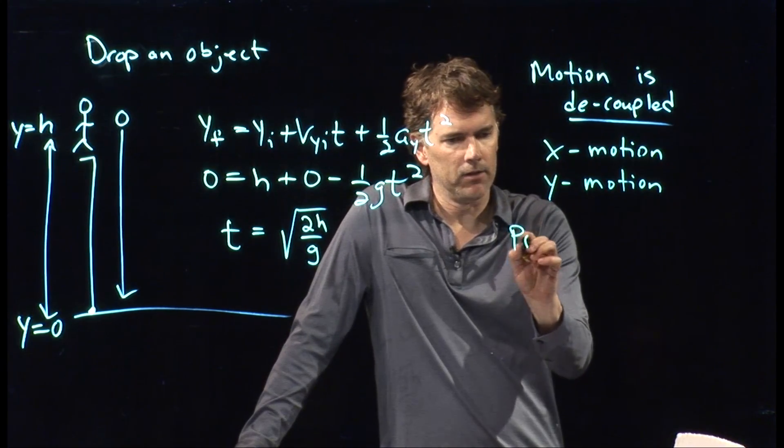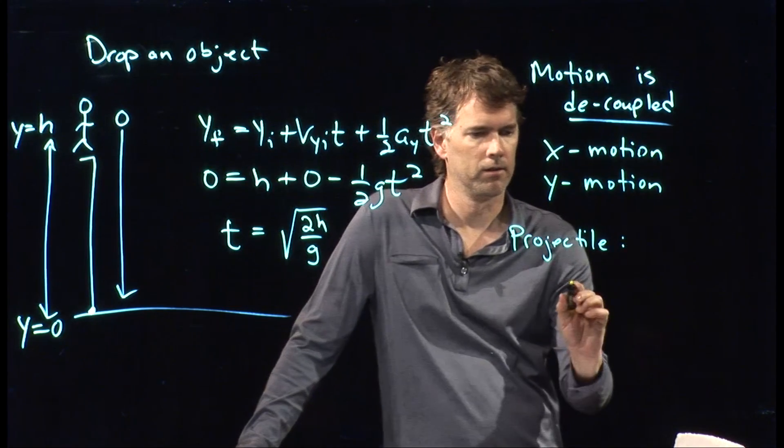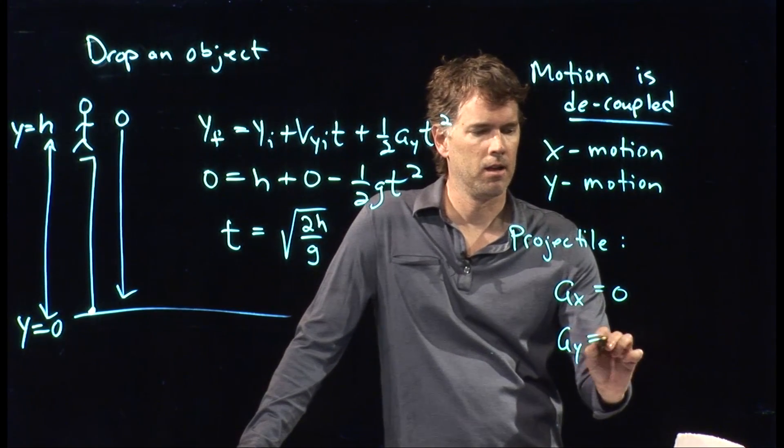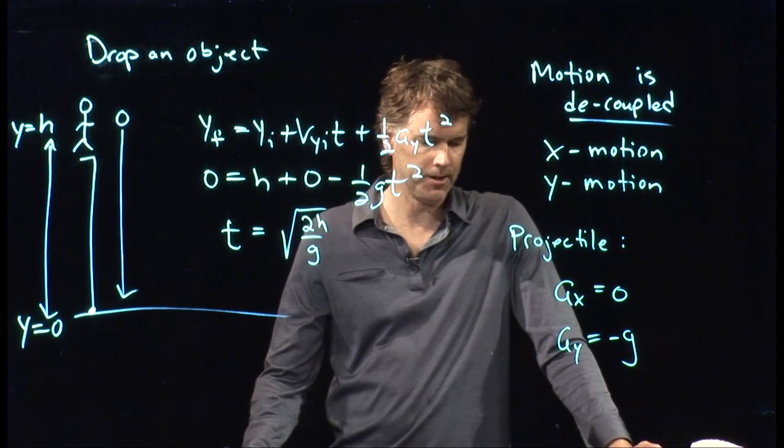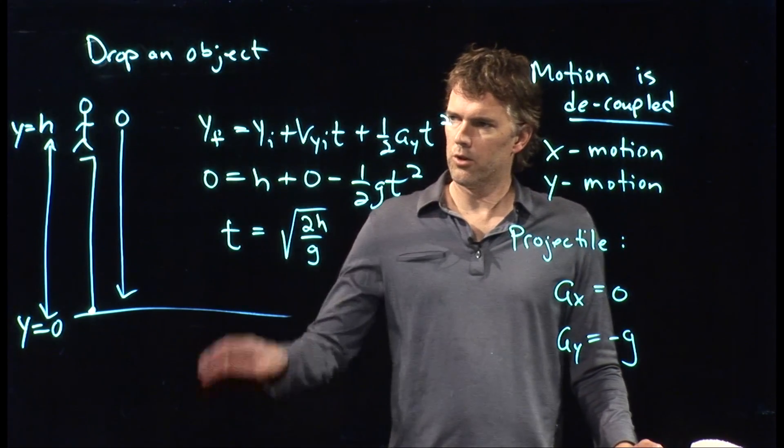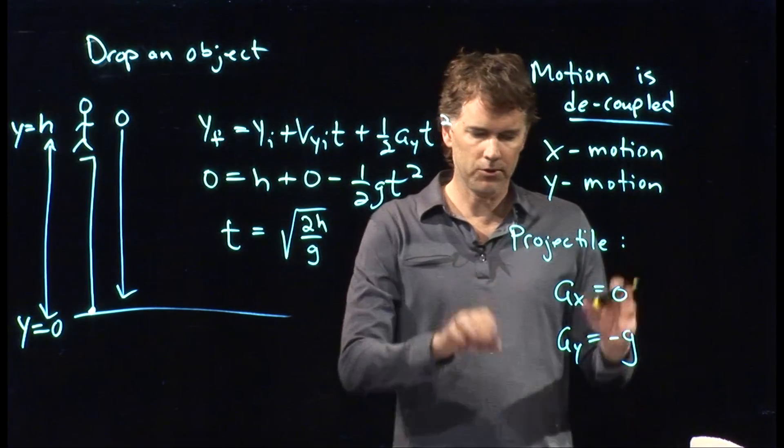And for our projectiles, we in fact knew the following: A sub x was equal to zero, A sub y was gravity, negative g. So all those equations that we just learned in one dimension just apply again to two dimensions.